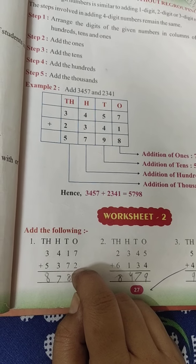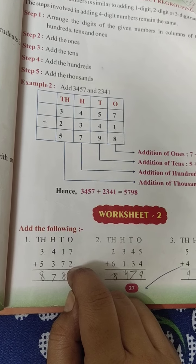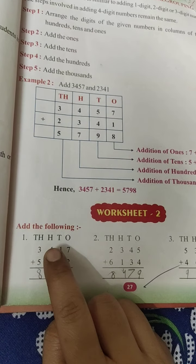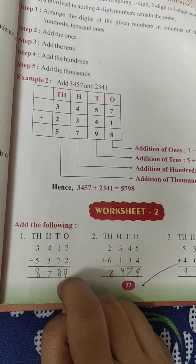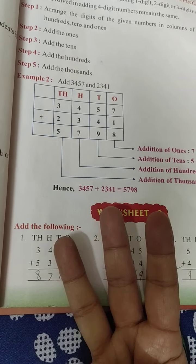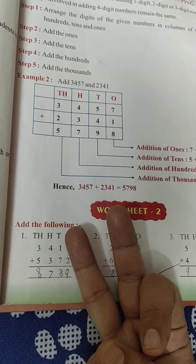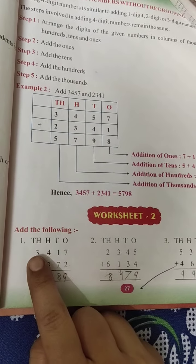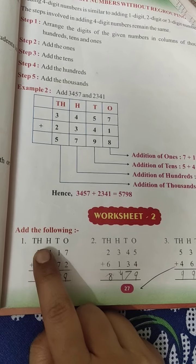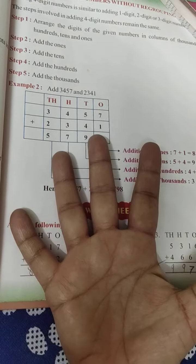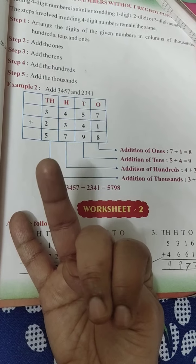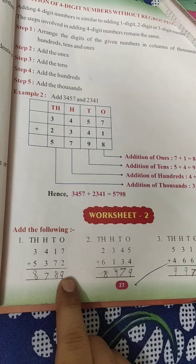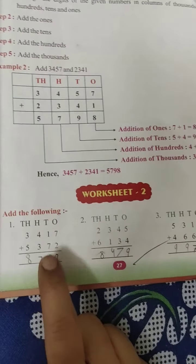4 and 3, how many fingers will you open? 3, and you will count after 4: 5, 6, and 7. Write down 7 here. Then 3 and 5. After 3, you will open 5 fingers: 4, 5, 6, 7, and 8. This is my answer here. I am solving only one question. You will solve all the questions by yourself and check the answers from this.